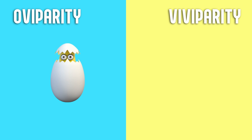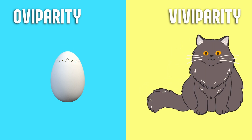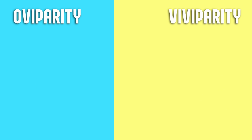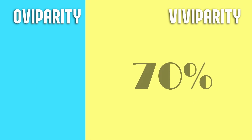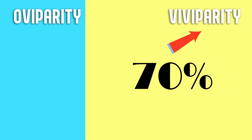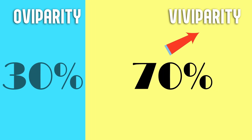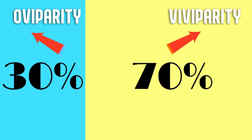On the contrary, viviparous animals give birth to live animals that have matured within the female womb. Around 70 percent of sharks are viviparous, while the remaining 30 percent are oviparous. Normally, most oviparous fish species release their eggs into the water.